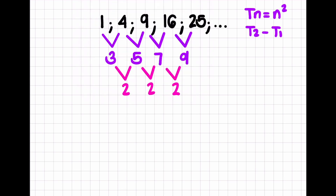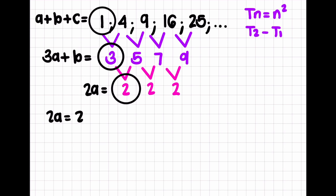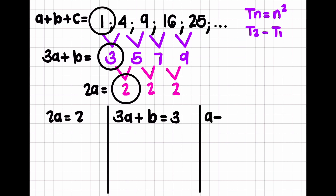I'll go a lot quicker in the next examples — I just want to spend a little bit of time doing it properly this first time. Now I'm going to circle the first term of each of my rows, then I have formulas I need to learn. So I have: 2a equals the first term of the second difference; 3a plus b equals the first term of the first difference; and a plus b plus c equals the first term of the sequence. So I have 3a plus b equal to 3, and a plus b plus c equal to 1.